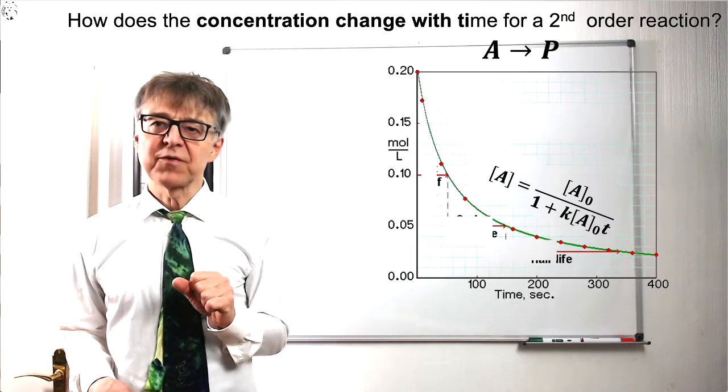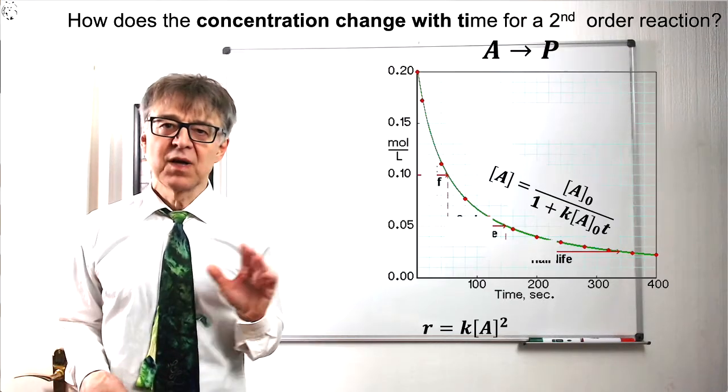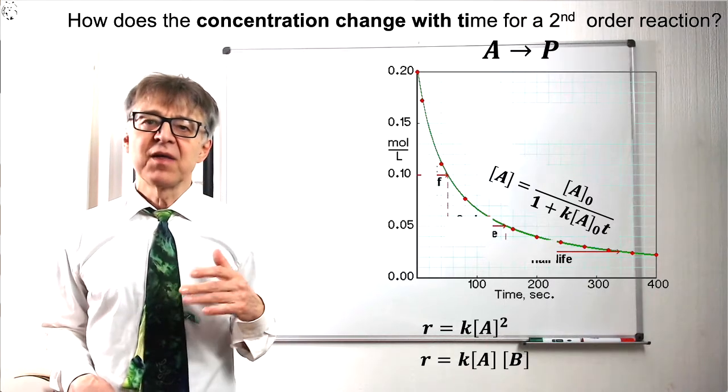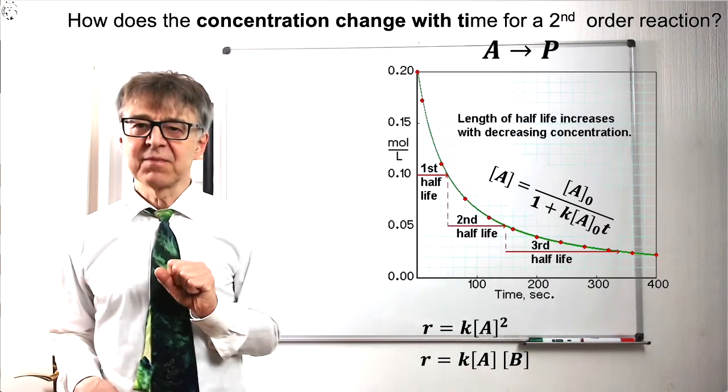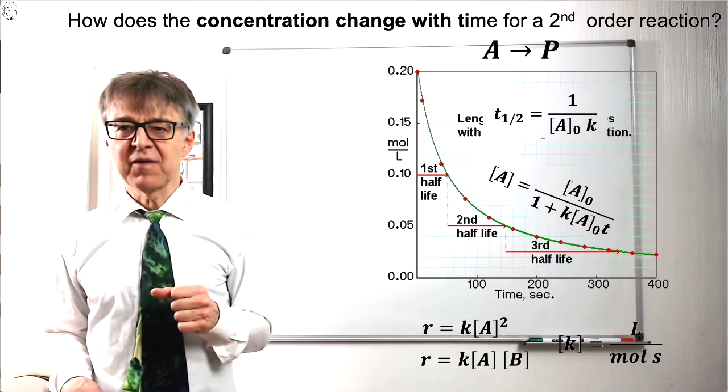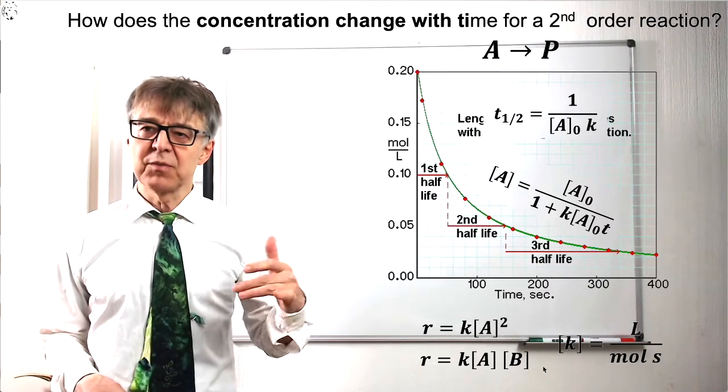These are the kinetic equations for a second-order reaction. The reaction rate is proportional to the square of the concentration. The integrated rate law is a bit more complicated. The half-life becomes longer and longer over time, and the unit of the rate constant is liters per mole and second.